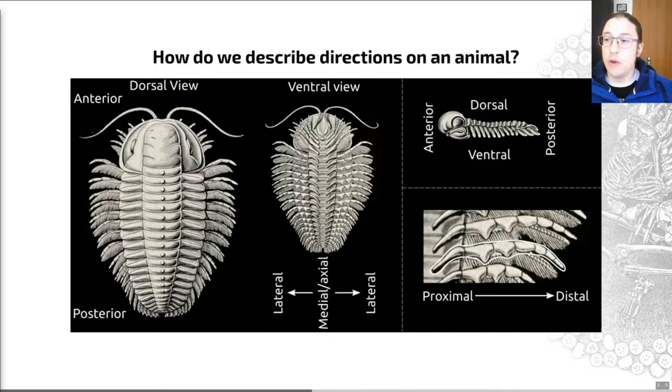On this ventral view, I've also marked medial or axial. These words can largely be used interchangeably in a number of groups, though not all of them. This means towards the middle of a creature when you're looking at it either from above or from below. And to either side of that, we call lateral. For example, the legs which you can see here are lateral to this axial bit of the organism.